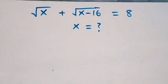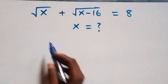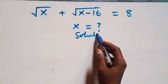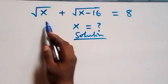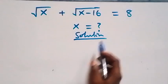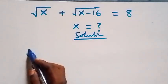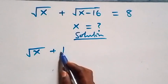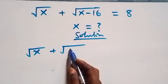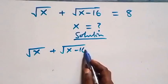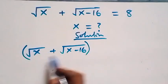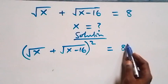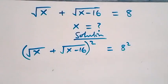Hello, you're welcome. Here we solve this nice square root problem. From what is given, let's take the square on both sides directly. We have (√x + √(x-16)) all squared equals 8 squared.